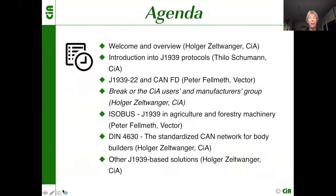Just so you are all aware of what we are talking about today: we begin with the welcome and overview, then Thilo Schumann from CiA gives a short introduction to J1939 protocols. Peter Fellmik from Vector goes into details of J1939-22, which is the CAN FD adaptation recently published. During the break there will be information on the CiA organization, followed by the ISOBUS specification explained by Peter Fellmik again, then DIN 4630 — the standardized CAN FD network for bodybuilders based on J1939 — and finally other J1939-based solutions.